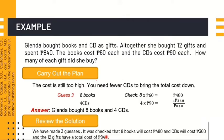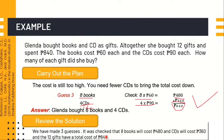What if we add 1 more to the books: 8 books and 4 CDs — 8 plus 4 is still 12 gifts total. 8 times 60 pesos is 480. 4 times 90 pesos is 360. 480 plus 360 is 840 pesos — that's correct! We made 3 guesses and it was checked.